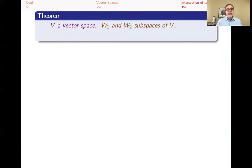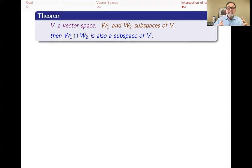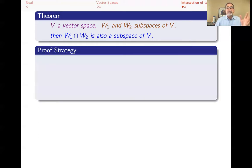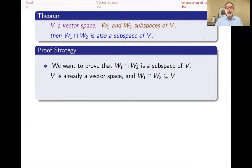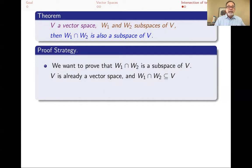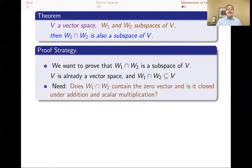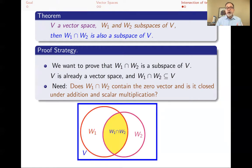Going back to our theorem: we have a vector space V, W1 and W2 are known to be subspaces, and we want to show that W1 ∩ W2 is also a subspace. Our proof strategy: what do we want to prove? We want to prove that W1 ∩ W2 is a subspace of V. V is already a vector space and W1 ∩ W2 is a subset of V, so our theorem is applicable. Therefore, we have to ask: does W1 ∩ W2 contain the zero vector of V, and is it closed under addition and scalar multiplication? If yes to all three, then W1 ∩ W2 is a subspace and the theorem is proved.